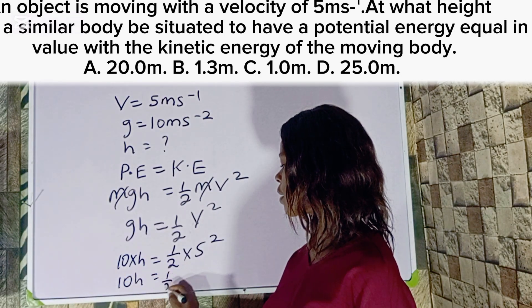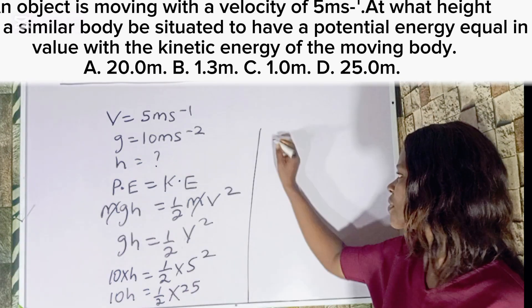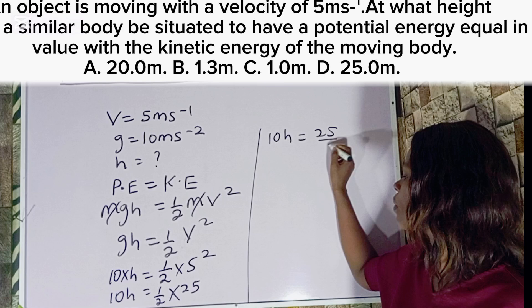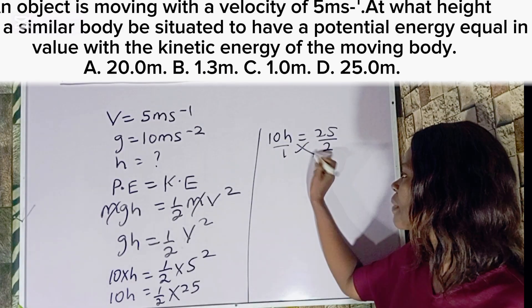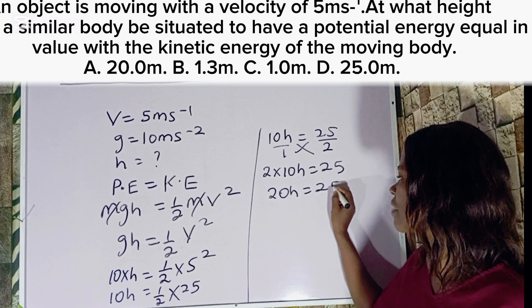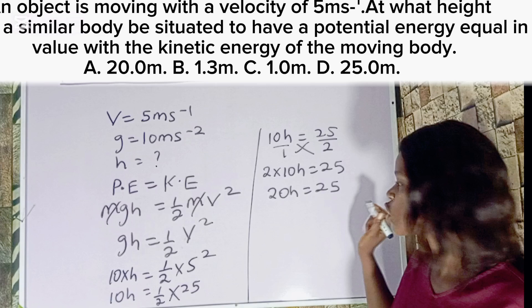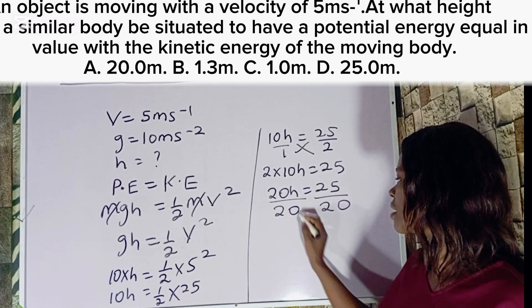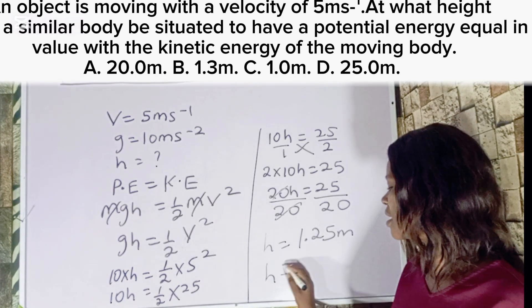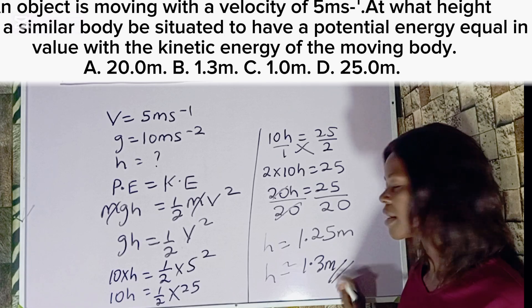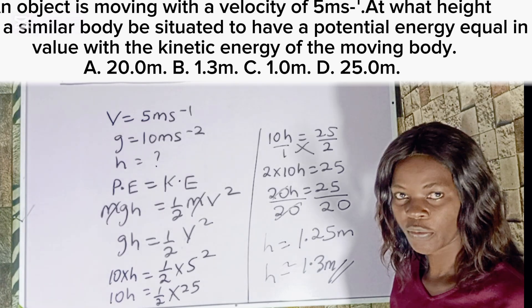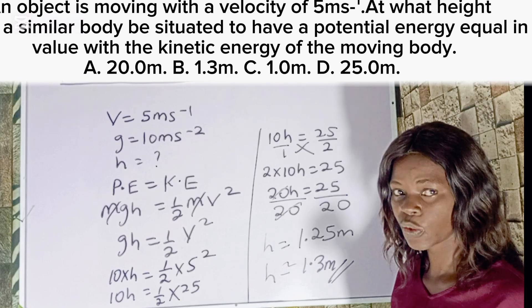When you multiply, 10h equals 1 over 2 times 25. To get the height, 10h equals 25 over 2. Cross multiplying: 2 times 10h equals 25, so 20h equals 25. Dividing both sides by 20: h equals 1.25 meters, which approximately gives us 1.3 meters. So if you have this type of question where potential energy equals kinetic energy and you're looking for height, this is how you solve it. The correct option is Option B.